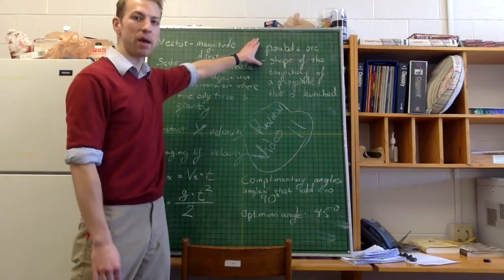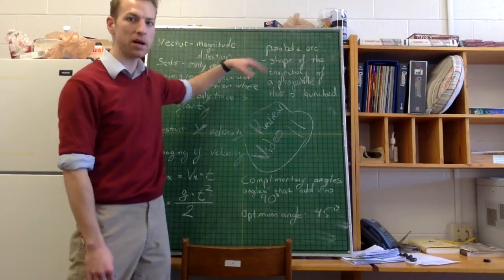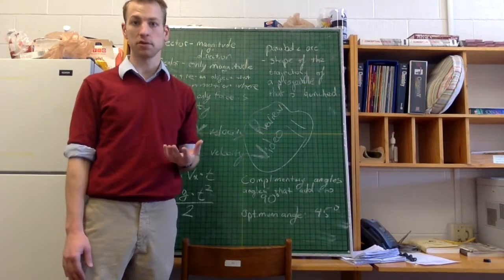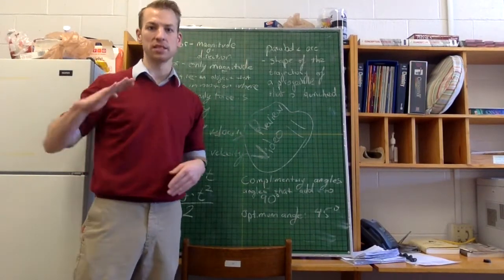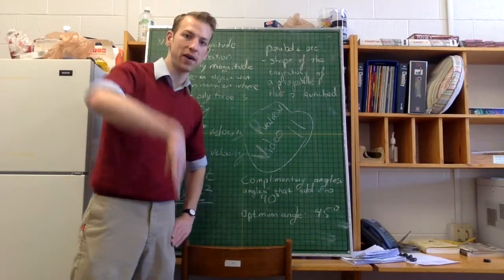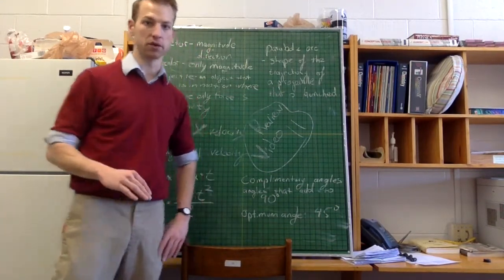We call that a parabolic arc. The parabolic arc is the actual trajectory that a projectile will take. It's something like a curved line going downward. As it's going constantly in the horizontal direction, but it's being pulled faster and faster in the vertical direction.